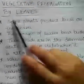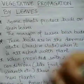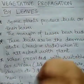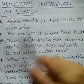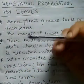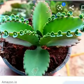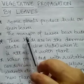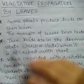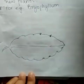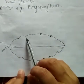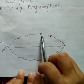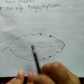Vegetative propagation by leaves describes how new plants grow out from leaves. Some plants produce buds on their leaves — for example, bryophyllum. The margins of the bryophyllum leaf bear buds at notches. You can see that these buds are produced at the notches along the leaf margin.